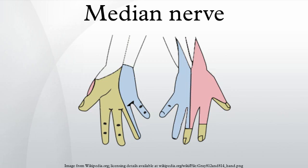Forearm: the median nerve arises from the cubital fossa and passes between the two heads of pronator teres. It then travels between flexor digitorum superficialis and flexor digitorum profundus before emerging between flexor digitorum superficialis and flexor pollicis longus. The unbranched portion of the median nerve innervates muscles of the superficial and intermediate groups of the anterior compartment except flexor carpi ulnaris.